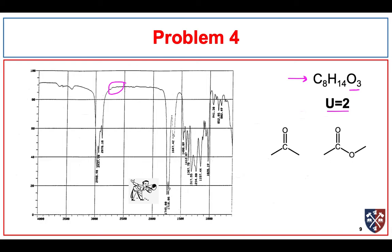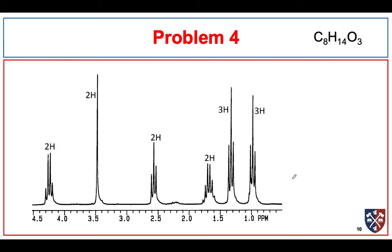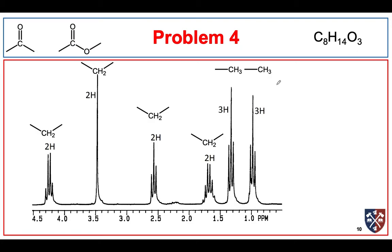I don't see anything indicating an aldehyde, so this is consistent with two carbonyls — two absorption peaks in the IR. Looking at the NMR, let's assume anything integrating for 2 is a CH2 and anything integrating for 3 is a CH3. Counting our carbons: 1, 2, 3, 4, 5, 6 — plus a carbonyl and an ester gives 7 and 8 carbons.